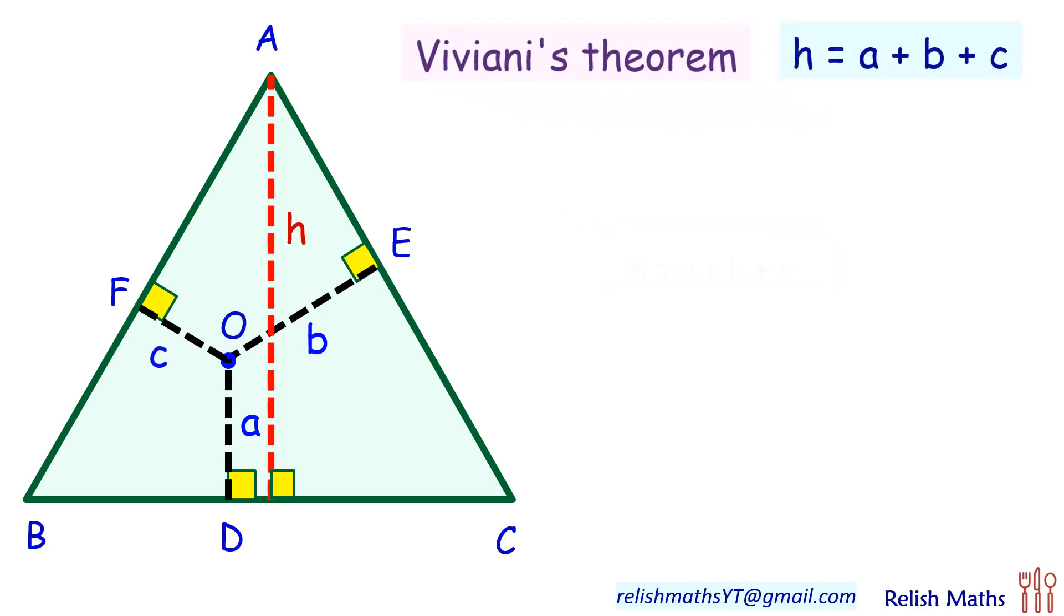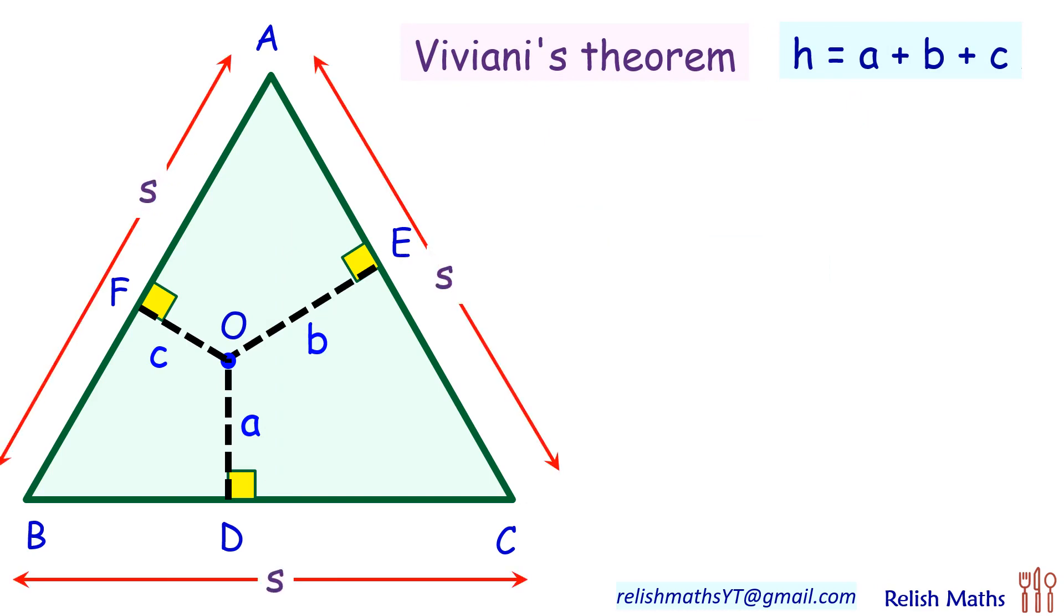Let's assume each side of the triangle is s units. Now for triangle OBC, that is this yellow triangle, the area will be half of base into height. Base is s units and height is a units, so it will be ½ × s × a. Similarly for triangle OAC, that is this pink triangle, the area will be half of base into height, so height will be b units here, so ½ × s × b.